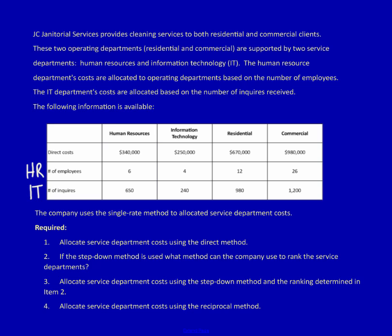Step two: we need to eliminate the services that each department performs for themselves. Go to the first row of the drivers — HR. I look at HR and I move over from HR to HR. HR cannot allocate HR costs to HR, so we have to X this out.